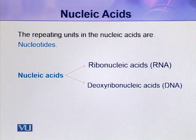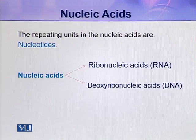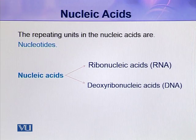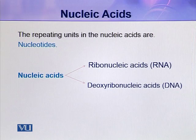Nucleic acids are mainly of two types: ribonucleic acids (RNA) and deoxyribonucleic acids (DNA). There are three types of RNAs: tRNA (transfer RNA), rRNA (ribosomal RNA), and mRNA (messenger RNA). They have a number of functions to perform in the cell, mainly during protein synthesis.